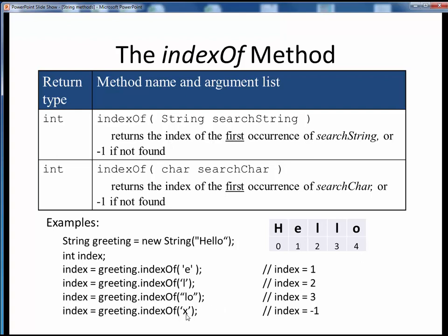But, since the X character is not found within the string, a search for it yields an index of minus one. Again, notice that we are invoking the method upon this specific string, using dot notation, and that we are reusing and overwriting the same index variable with each of these method calls.